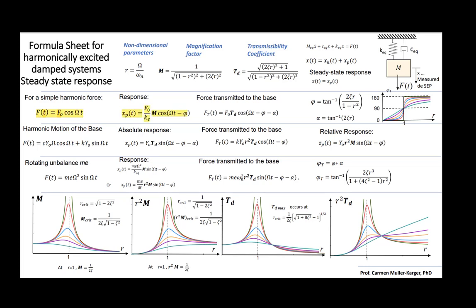Therefore, this is our response. It will be the same magnitude divided by the constant of the spring times the magnification factor, and this is the magnification factor. Since we do not have damping, we will only have the first term.